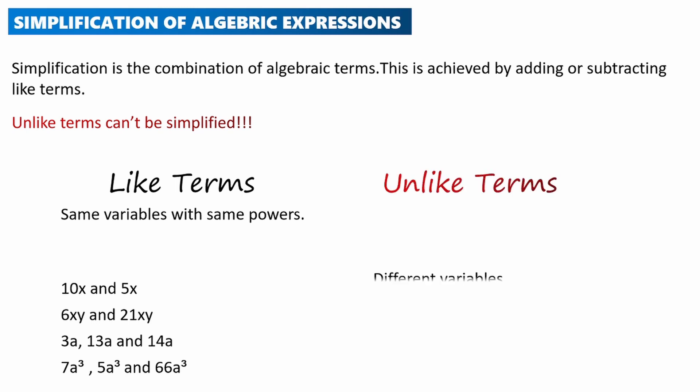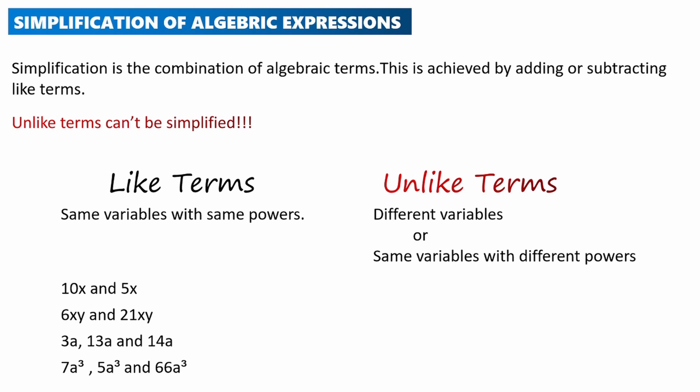On the other hand, we have unlike terms. Terms are unlike if they have different variables, or if they have the same variables with different powers. For example, 10x and 5y are unlike because x and y are two different variables. Another example is 6xy and 21xy² — the variables are the same but the powers are different.